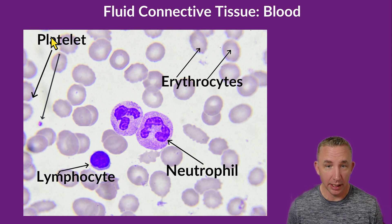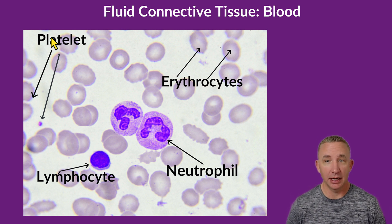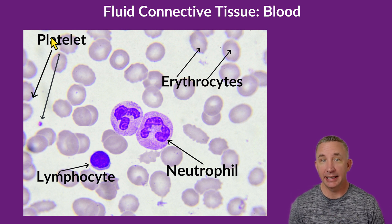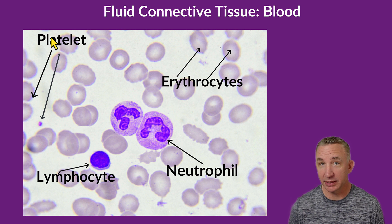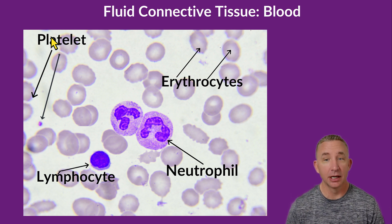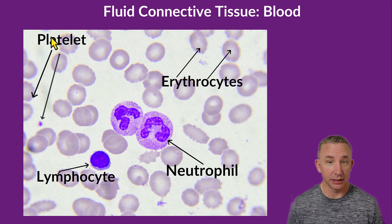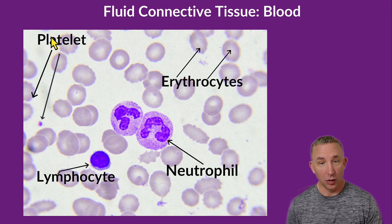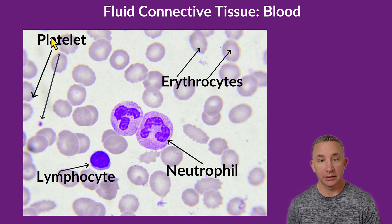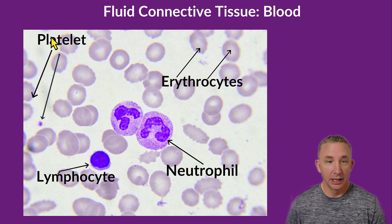Here we're looking at blood, and since I see a bunch of pink bubbles, I know that's my blood because 99.9% of all the formed elements — the cells in blood — are erythrocytes, and erythrocytes are red blood cells. All of these pink little bubbles throughout the slide are erythrocytes, transporting carbon dioxide and oxygen.